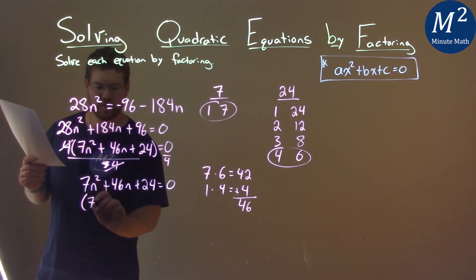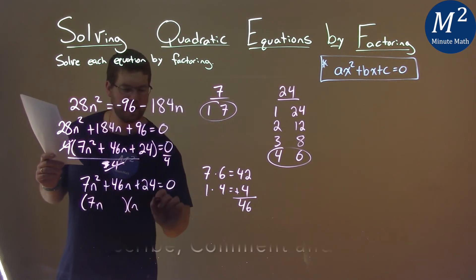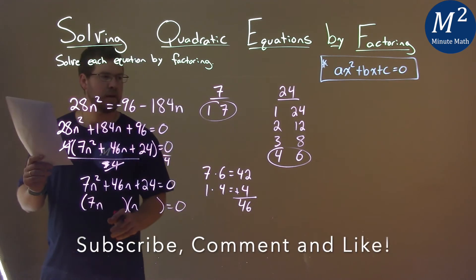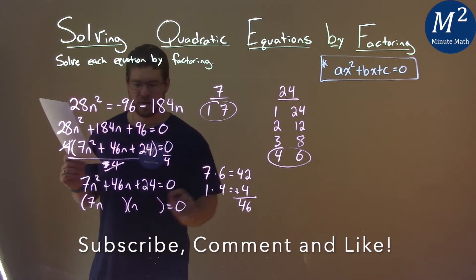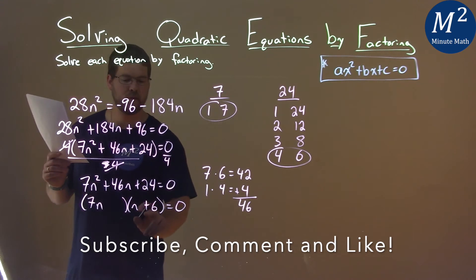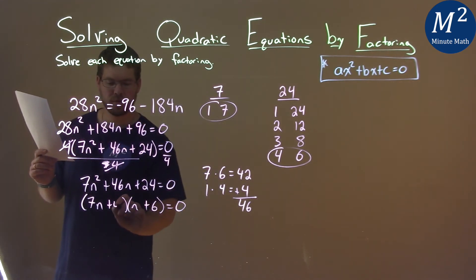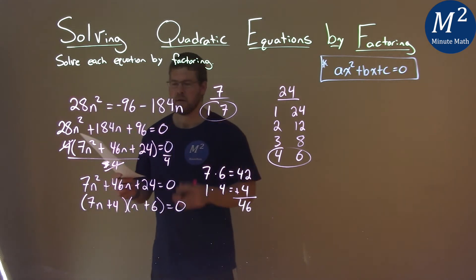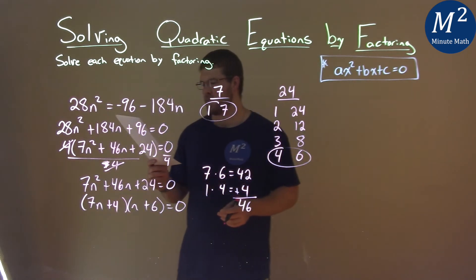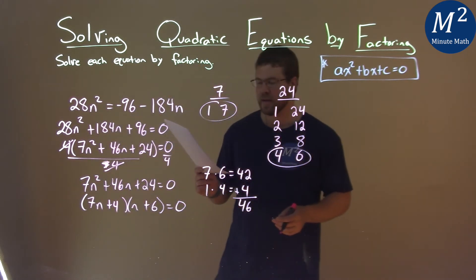So four and six and one and seven are my two pairs. So this factor has to be 7n, and then n here equals zero. Seven got multiplied by the six, so this plus six has to go in the second parentheses. One got multiplied by the four, we put a plus four here. So now we have 7n plus four times n plus six equal to zero. Let's go solve that.